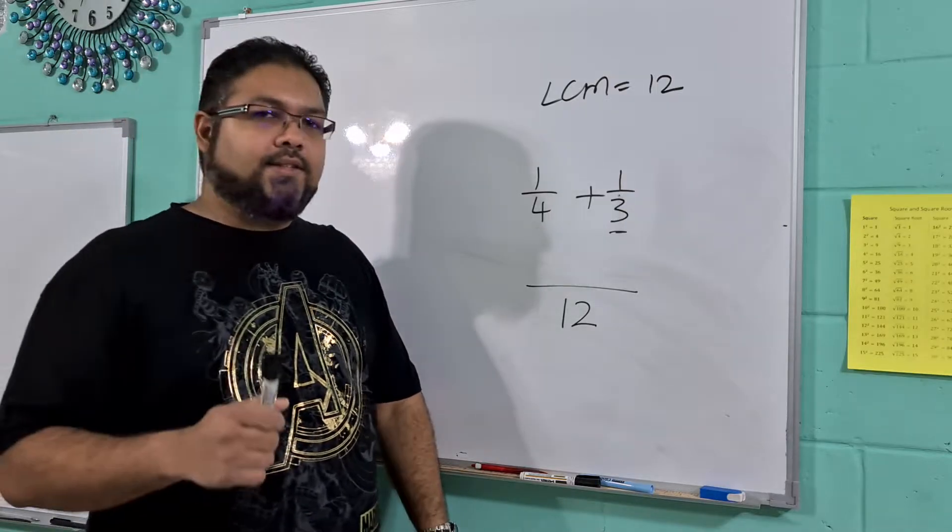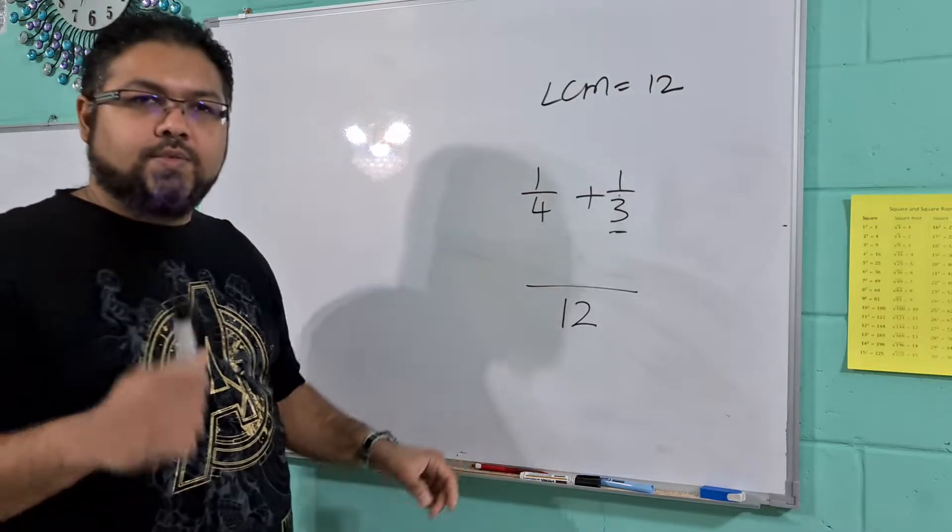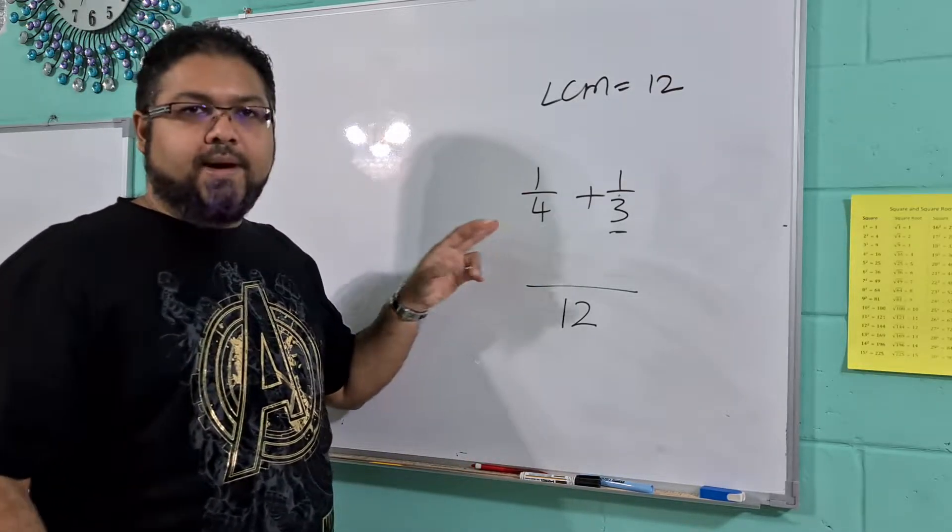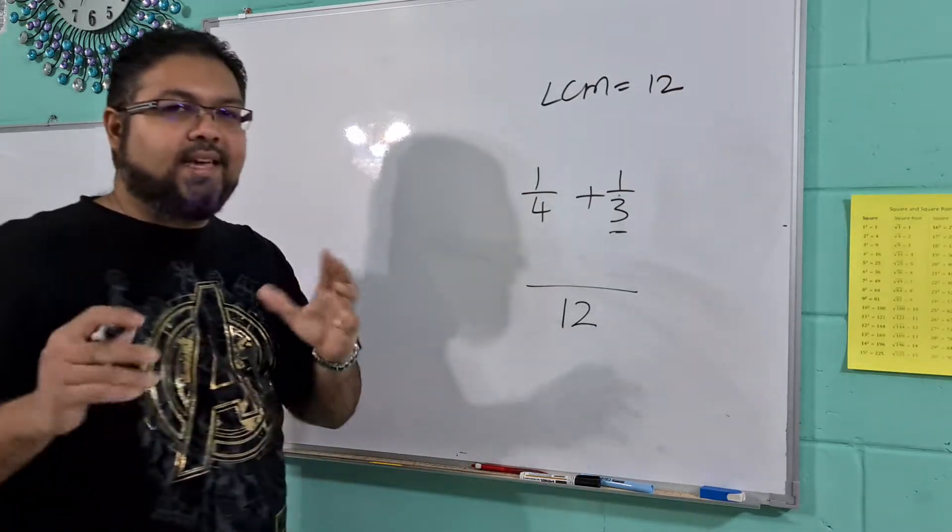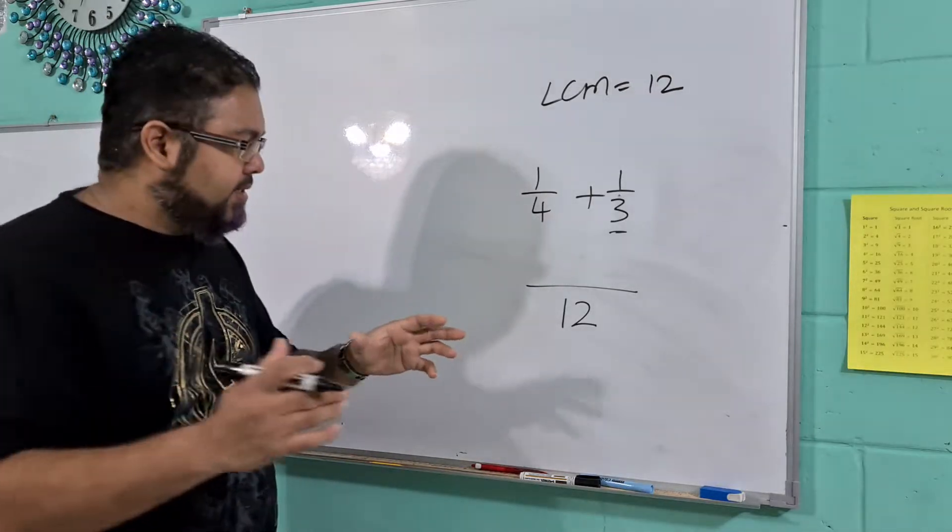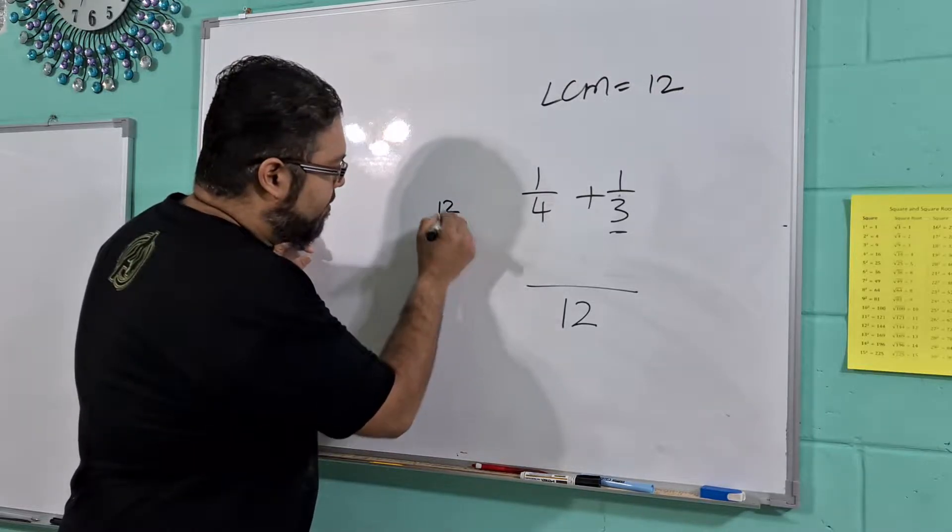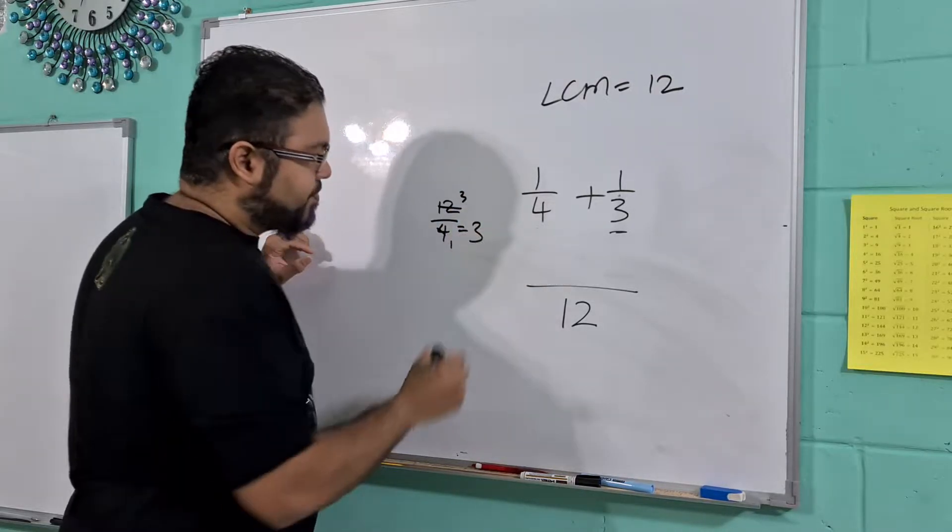So what do we do is essentially this. We want to turn this into a fraction over 12. So we see 12 divided by 4. We actually put it here, usually we don't, but just to show you guys in great detail. So we say 12 divided by 4, so we get 1 and you get 3, so you get 3.